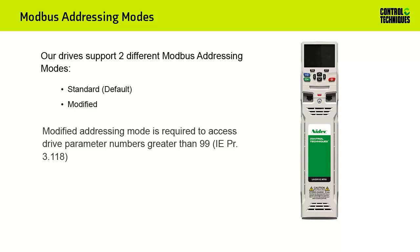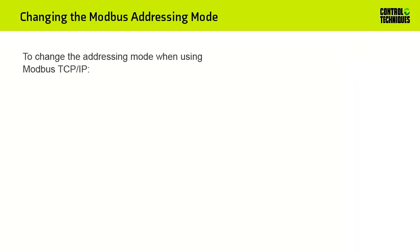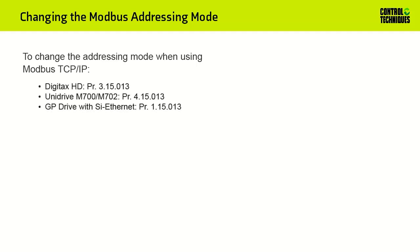For example, if I wish to access menu 3, parameter 118, I would need to change the addressing mode to Modified. For Modbus TCP-IP communication, the addressing mode is changed using parameter number 13 in the Modbus setup menu, which is menu 15. In a Digitax HD, you may access this parameter by opening slot 3, menu 15.